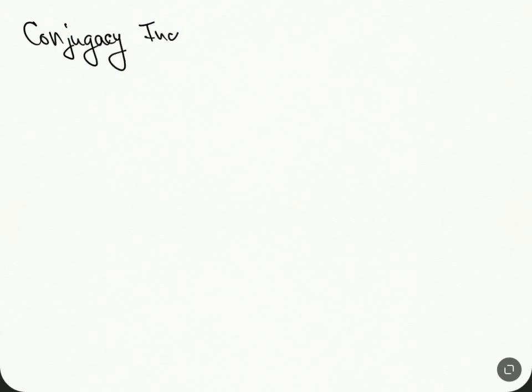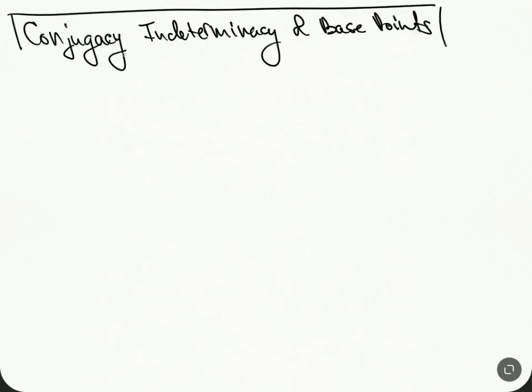I want to talk about conjugacy, determinacy, and base points. This is kind of basic — if you understand this and why you have to consider things up to outer isomorphism, you don't need to watch this video. Let's start in the topological setting.